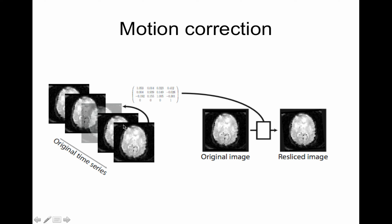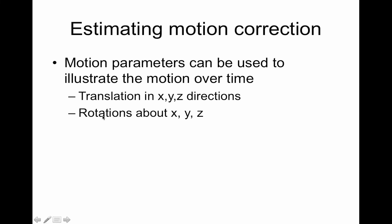Here's an example of what motion correction does. Here's a time series with five TRs of data — the original time series. Each time point is co-registered to the middle time point, and you get a transformation matrix — a six-parameter transformation matrix. Then the original image is registered and resliced. So if you have 252 TRs in your time course, you're going to run 251 image registrations, all registering to the middle time point.